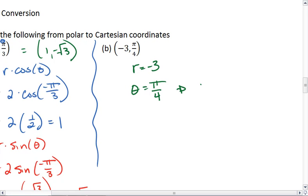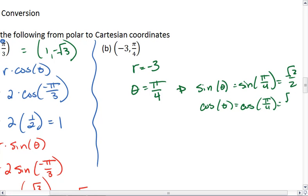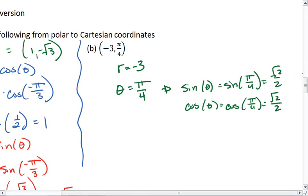Which means that sine of theta, which equals sine of pi-fourths, is going to be root 2 over 2. And cosine of theta, which is cosine of pi-fourths, is also root 2 over 2. I'm just getting that calculation done ahead of time. And for those numbers, I found it using my unit circle.